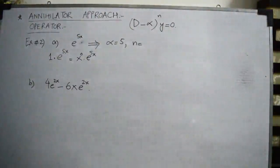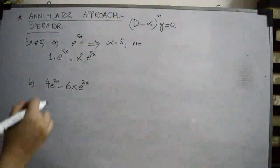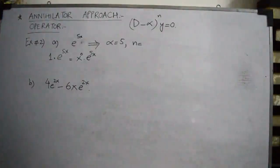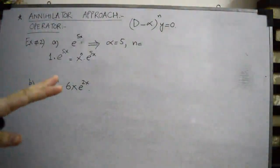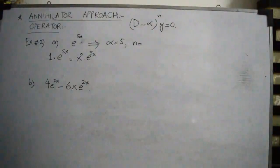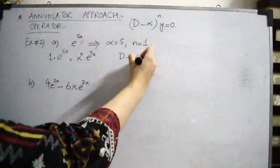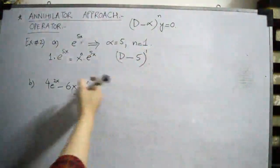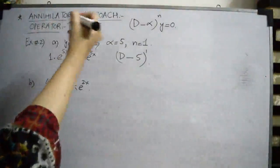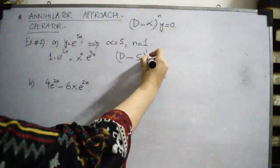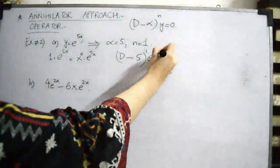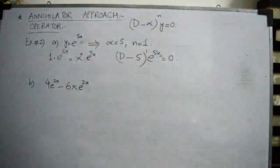We can write e^(5x) as x^0 · e^(5x), so the highest power of x is 0. Adding 1 to 0 gives n equals 1. Therefore its annihilator operator is (D minus 5)^1, and applied to y equals e^(5x) gives zero. This is the annihilator operator for the function y equals e^(5x).